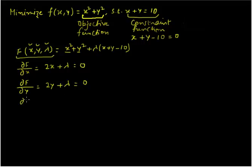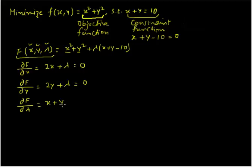Let us do it one more time — partial derivative of F with respect to lambda this time. With respect to lambda, the constraint function is going to return to us, so we write: x plus y minus 10 is equal to 0. So we have this system of equations now, which we can solve for x, y, and lambda.